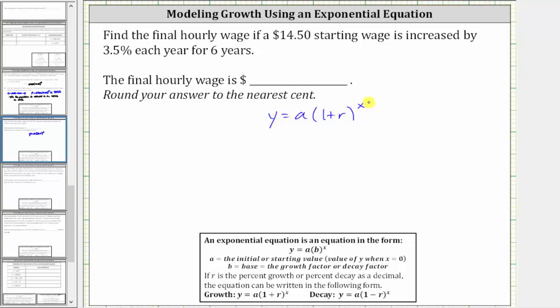If we want to use the variables x and y, let's let y equal the hourly wage and x equal the time in years. And again, a is the initial or starting value, and therefore a is equal to $14.50, or just 14.5.